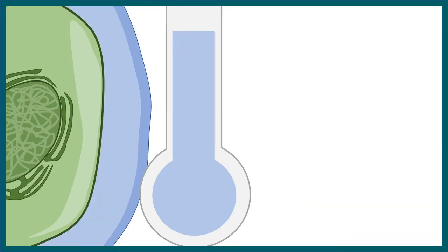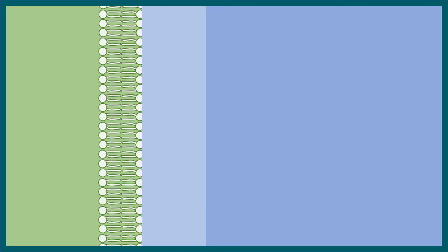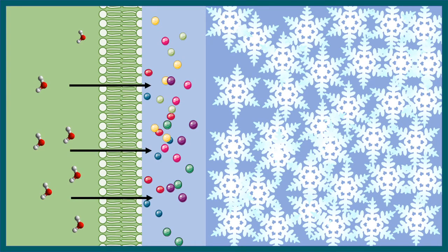But when the temperature drop is gradual, that is also problematic. Because the solvent surrounding the cell is frozen, the solute concentration really increases. A lot of water is lost from the cells, the cells are dehydrated and crenated, and eventually the cells die.